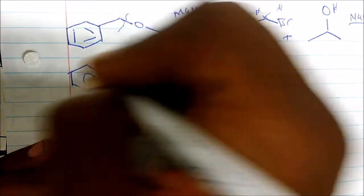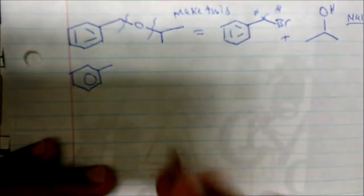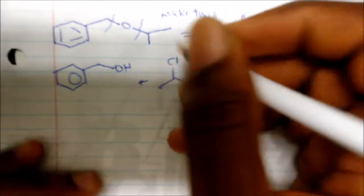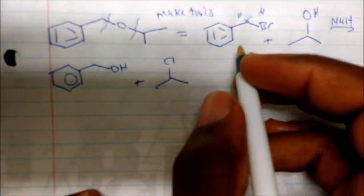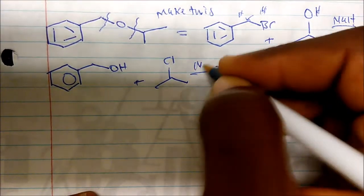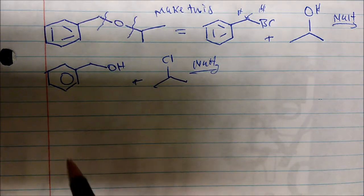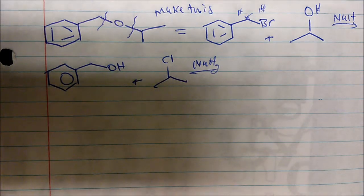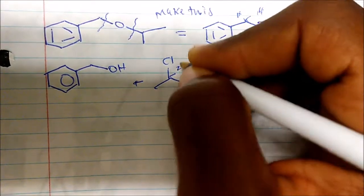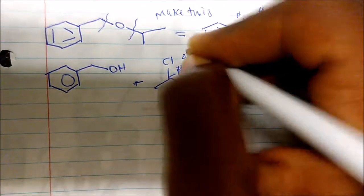But look what happens if we did it the other way. What if we broke the bond here? Now I have this molecule plus chlorine and sodium hydride. We would still get the product but at a much slower rate because this is now secondary carbon.